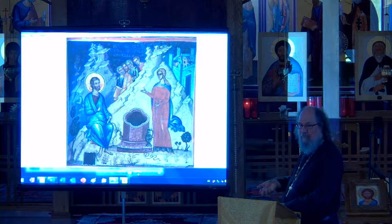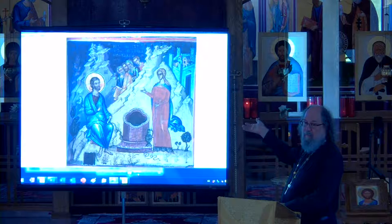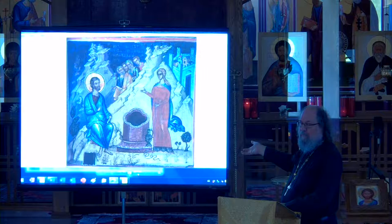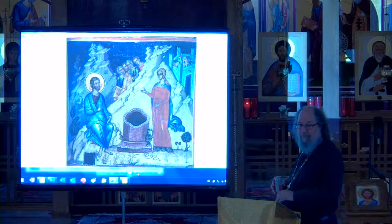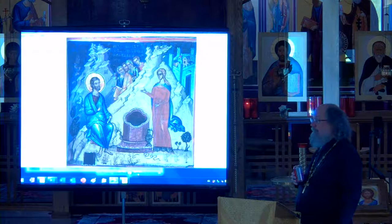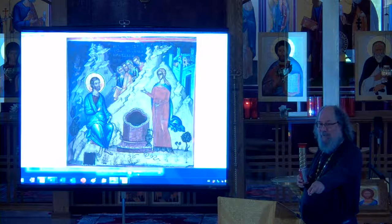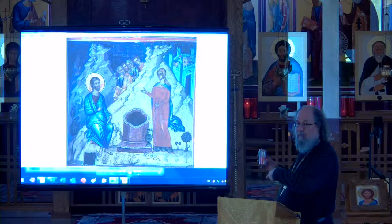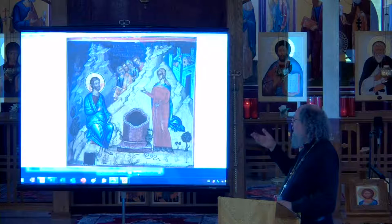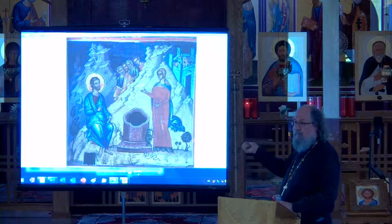Photini ends up becoming an evangelist — she's considered equal to the apostles. Could that change — her repentance — have caused this color change in her? She also has her hair showing, which shows she is not bound by the same conditions and laws, because she's a Samaritan and therefore outside the societal norms foisted upon the people there. Very good observations.